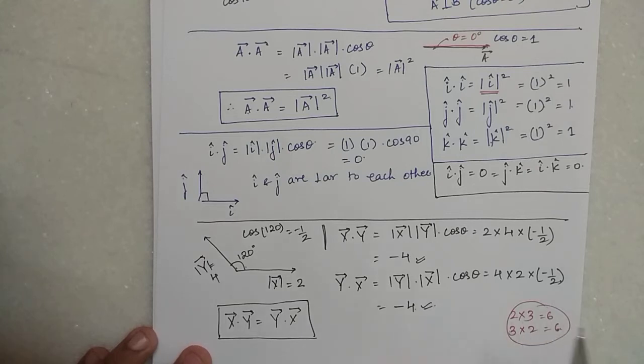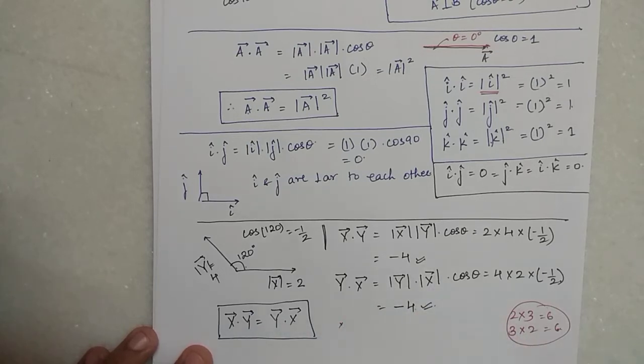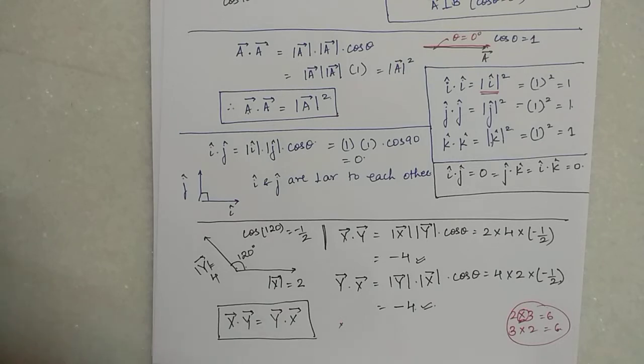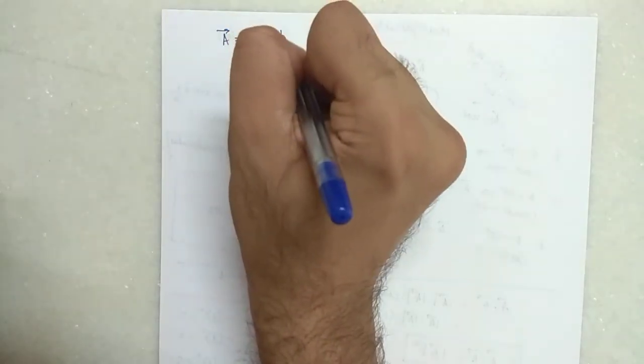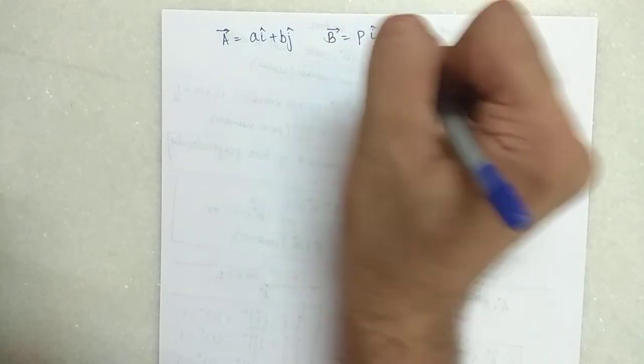Please note: for dot product you must always put a dot symbol — do not put a cross. When you normally multiply numbers you put a multiplication sign, but for dot product you always use the dot. Please go through this section; it is very very important. Now we will see how to do dot product of two vectors that are given in terms of I, J, and K.